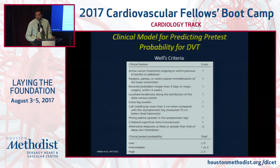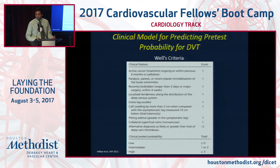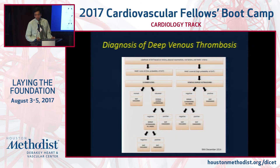The Wells criteria has been the clinical gold standard to risk-stratify patients into low, intermediate, and high risk in terms of clinical pretest probability for almost 15 years. Active cancer, paralysis, recently being bedridden, calf swelling, and pitting edema all feed into a risk scoring system to determine low, intermediate, or high risk for DVT. Based on that, you can use a biomarker — D-dimer — or go straight to venous duplex ultrasound to diagnose DVT.